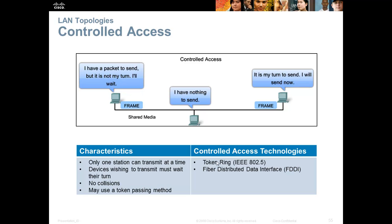Controlled access is used in token ring or FDDI scenarios. Only one station can transmit at a time — no collisions. Devices that want to transmit must wait for their turn and use a token passing method. Think of a classroom: typically the teacher communicates; if a student wants to speak, they raise their hand, the teacher points to them, and only that person communicates. With a token — like a ruler — whoever holds the ruler gets to communicate. This is ideal when you want no collisions and guaranteed delivery of data.